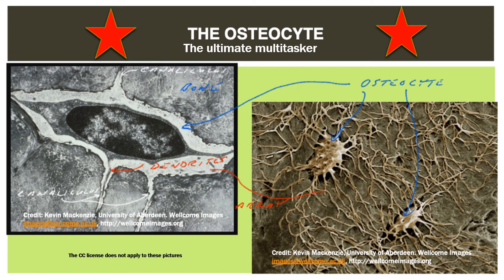Osteocytes represent 95% of bone cells, live for decades, and are responsible for multiple tasks: a mechanosensor cell that coordinates adaptive responses of the skeleton to mechanical loading; a regulator of bone remodeling through control of osteoblasts and osteoclasts; an endocrine cell sending hormones to other body systems and signaling markers locally; and a regulator of calcium, phosphate, and acid-base metabolism.